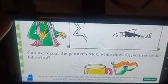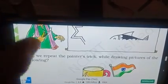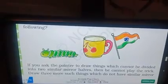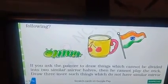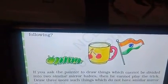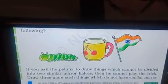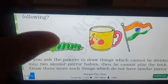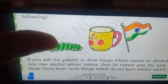Can we repeat the painter's trick by drawing pictures of the following? There are three pictures: caterpillar, cup, and our national flag. As the painter drew half of the picture, can we draw half and then complete it? Draw half of the caterpillar, half of the cup, and half of the flag.